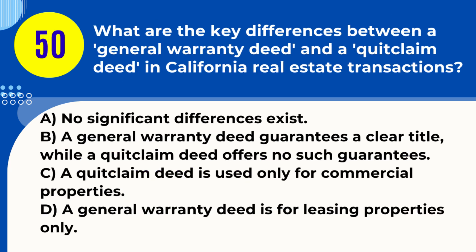Question 50. What are the key differences between a general warranty deed and a quitclaim deed in California real estate transactions? A. No significant differences exist. B. A general warranty deed guarantees a clear title, while a quitclaim deed offers no such guarantees. C. A quitclaim deed is used only for commercial properties. D. A general warranty deed is for leasing properties only. Answer: B. A general warranty deed guarantees a clear title, while a quitclaim deed offers no such guarantees. Explanation: In California, a general warranty deed provides assurance that the property title is free from defects, while a quitclaim deed transfers any ownership interest without any guarantees about the title.